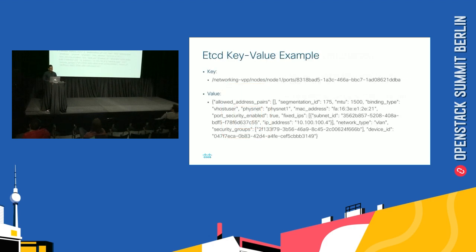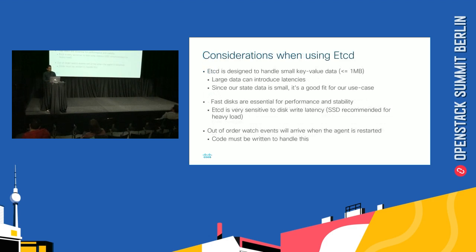Here is an example of an ETCD key-value. Let's say there is a node named node1 and you want to create a port. This is a key stored with the port ID, and the value is a JSON data structure. This key-value is stored in the ETCD database and communicated to the agent running on that node, giving it all the information needed to create that port. Some considerations when using ETCD: the data has to be small — it cannot handle bulk data. Fast disks are essential because it is very sensitive to disk latency. You can also get out-of-order events; for instance, in a configuration with security groups, if you restart the agent you may get a message to create security groups before a virtual machine is created. You will have to write code to handle those out-of-order events.